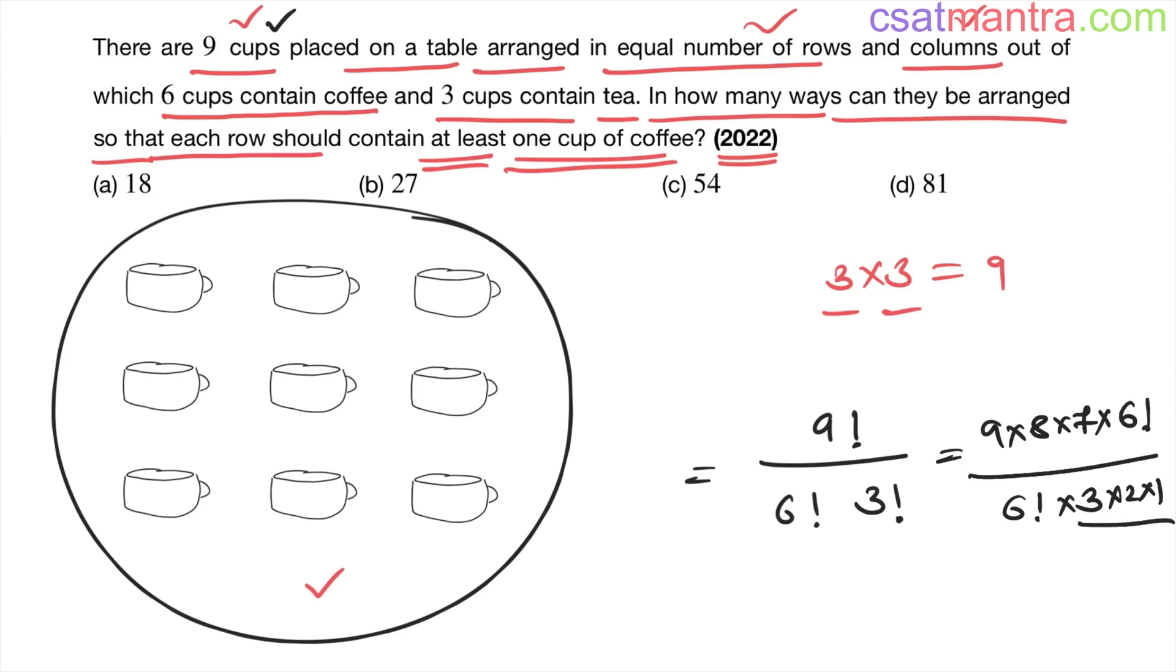Six factorial, six factorial gets cancelled out. Three factorial... three fours are twelve, twelve sevens are eighty-four. So eighty-four ways you can arrange these nine cups.